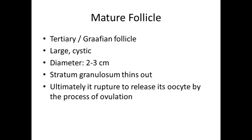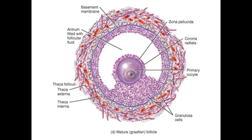The mature follicle is formed when granulosum cells proliferate further and there is a constant increase in liquor folliculi. This tertiary or Graafian follicle is a large cystic swelling measuring 2 to 3 cm. It extends to the full breadth of the ovarian cortex and produces a visible bulge on the surface of the ovary. Before ovulation, stratum granulosum thins out and the oocyte is released as the Graafian follicle ruptures. This is the schematic diagram of a mature Graafian follicle.